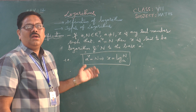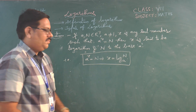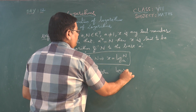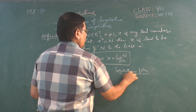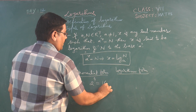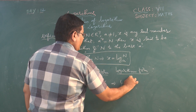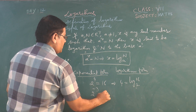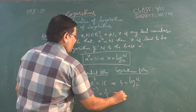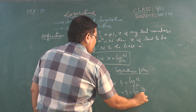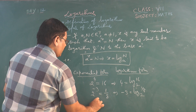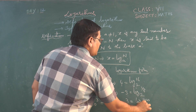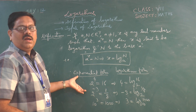Let us see examples of converting exponential form to logarithmic form. 2^4 = 16 implies 4 = log_2(16). 2^(−3) = 1/8 implies −3 = log_2(1/8). 10^3 = 1000 implies 3 = log_10(1000). This is how exponential form and logarithmic form are interconverted.